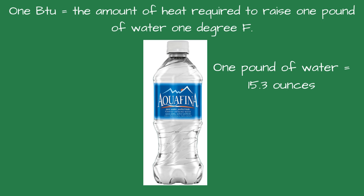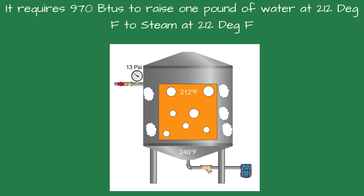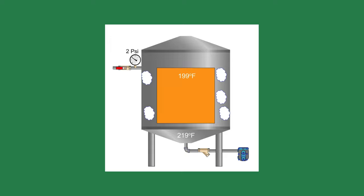The real challenge to getting a rolling boil is when the water temperature reaches 212 degrees Fahrenheit. It requires 970 BTUs to change 1 pound of water at 212 degrees to steam at 212 degrees — this is the latent heat. At 2 psi, the steam temperature is 219 degrees, or just 7 degrees above the 212 degree design temperature.